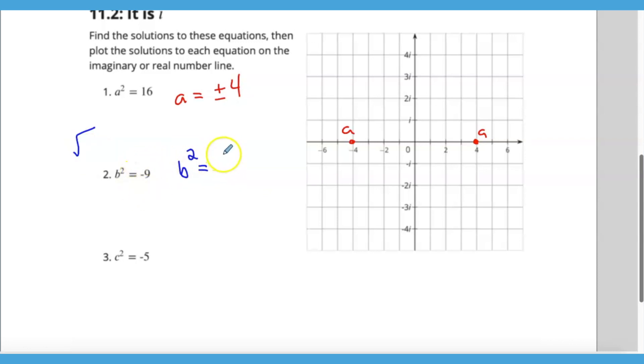I could rewrite negative 9 as 9 times negative 1, and then we could look at this as plus or minus the square root of 9 times the square root of negative 1. That would be 3 times the square root of negative 1. Now we've been introduced to i, so that could be plus or minus 3i, and I could represent that on the number line there.